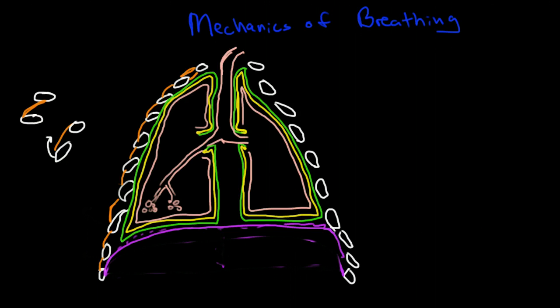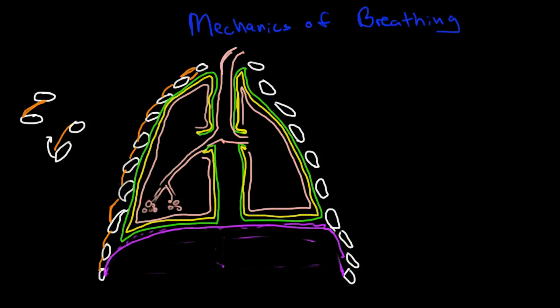So the alveoli actually always have a little bit of surface tension between the surfaces of the alveoli, because in each alveoli there is a very thin coating of fluid. And this fluid is mostly made up of water, and remember water being polar molecules wants to connect with another water molecule.